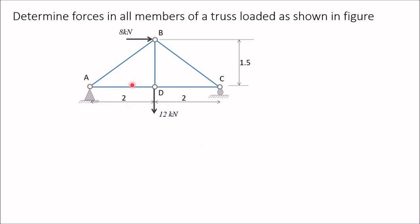To determine the reactions, we have to draw the free body diagram of the entire truss. In this free body diagram, the roller support at C gives one reaction RC perpendicular to the surface, and the pin support at A gives two reactions: one vertical reaction YA and one horizontal reaction XA. Now we will apply the equations of equilibrium.